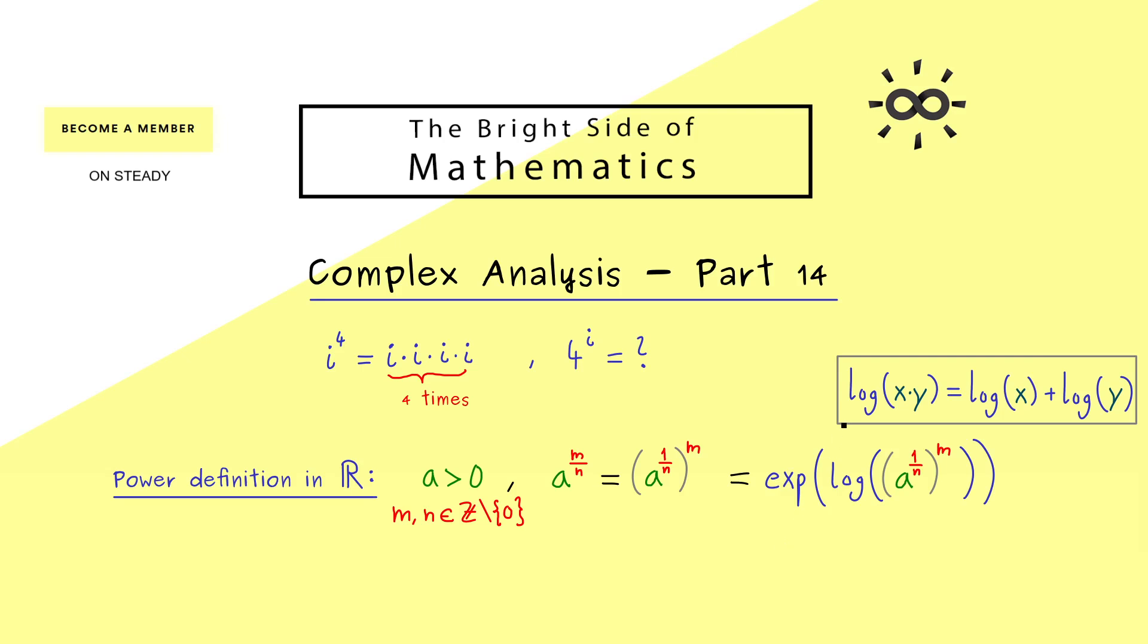Now it's not hard to see that we can use this fact here. Namely, the exponent m comes in front of the logarithm, so we have m times logarithm of a to the power 1 over n.